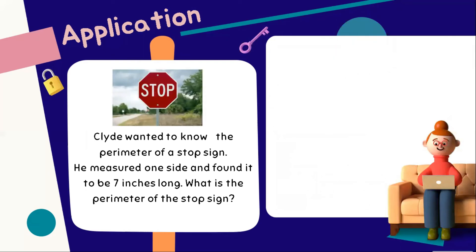And for the last word problem under the application part, Clyde wanted to know the perimeter of a stop sign. He measured one side and found it to be 7 inches long. What is the perimeter of the stop sign? We have here a stop sign with a shape of an octagon. This given octagon is regular octagon. Therefore, all sides are congruent.